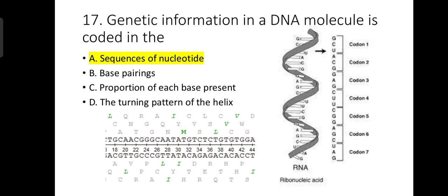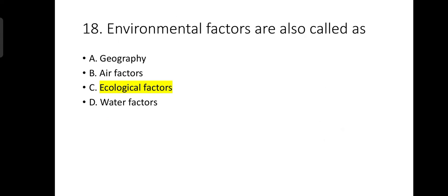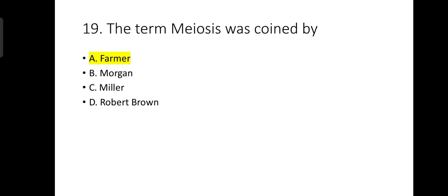Number 17: Genetic information in a DNA molecule is coded in the sequence of nucleotides. Number 18: Environmental factors are also known as ecological factors. Number 19: The term meiosis was coined by Farmer. There were two scientists known as Farmer and Moore, but since only one is mentioned here, we tick option A which is Farmer.